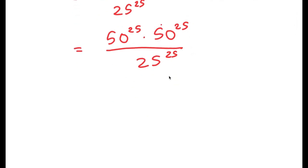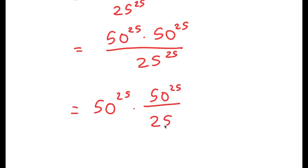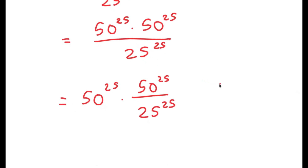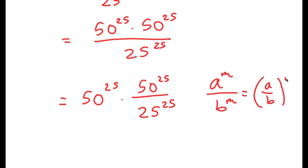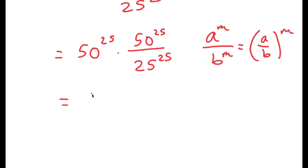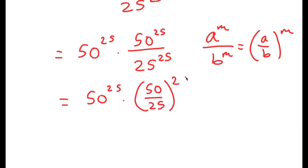Now from here, I'm going to rewrite this as 50 to the power of 25 times 50 to the power of 25, over 25 to the power of 25. And now I can use another property that states: if I have something in the form a to the power of m over b to the power of m, this is equal to a over b, to the power of m. So this gives us 50 to the power of 25 times 50 over 25, to the power of 25.